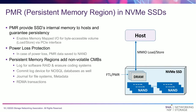PMR is introduced in NVMe 1.4 as an optional region — a general-purpose read-write persistent memory region that may be used for a variety of purposes. It is non-volatile and can be used for data, provides internal memory to host, guarantees persistency, and enables memory-mapped I/O for byte-accessible accesses through the PCIe interface. This region also has power-loss protection — in case of power loss, PMR data is saved to NAND or other media. Main uses of PMR and CMB include a log for software-RAID erasure coding systems, journaling for file systems, metadata storage, and RDMA transactions with NVMe over Fabrics.